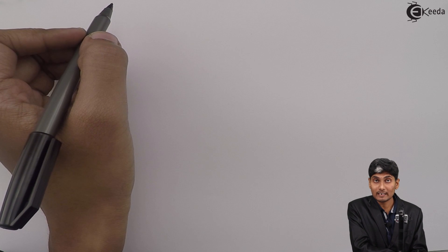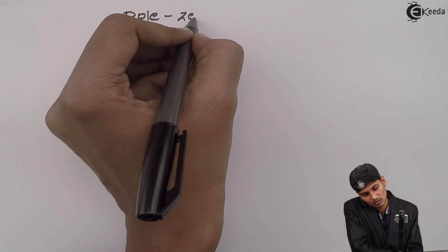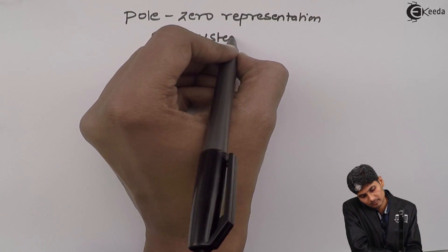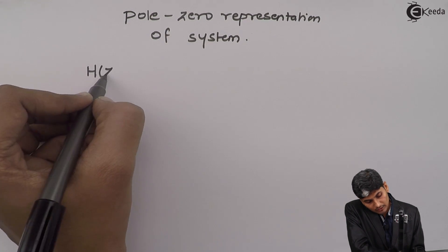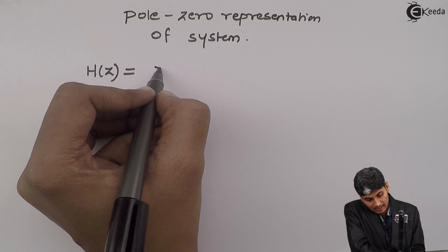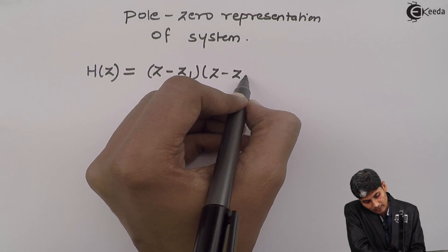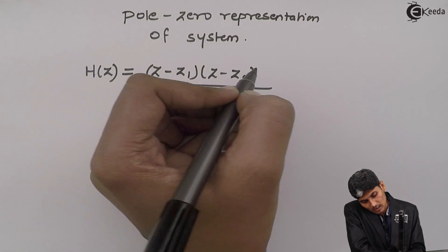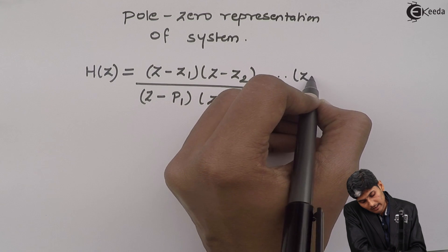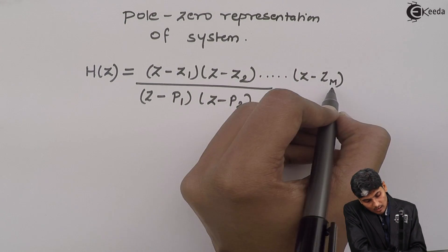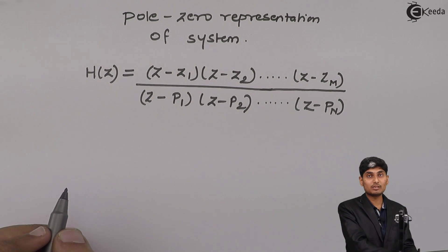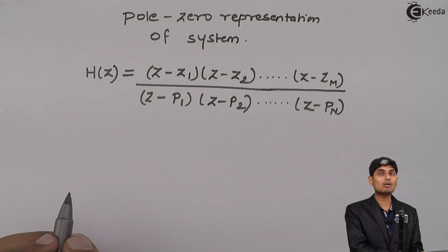Hi friends, today we are going to study the pole-zero representation of a system. For example, we know the transfer function H(z) is represented as (z - z1)(z - z2) divided by (z - p1)(z - p2), and this could go on till (z - zm) in the numerator and (z - pn) in the denominator, because the difference equation is nth order with respect to x and nth order with respect to y.